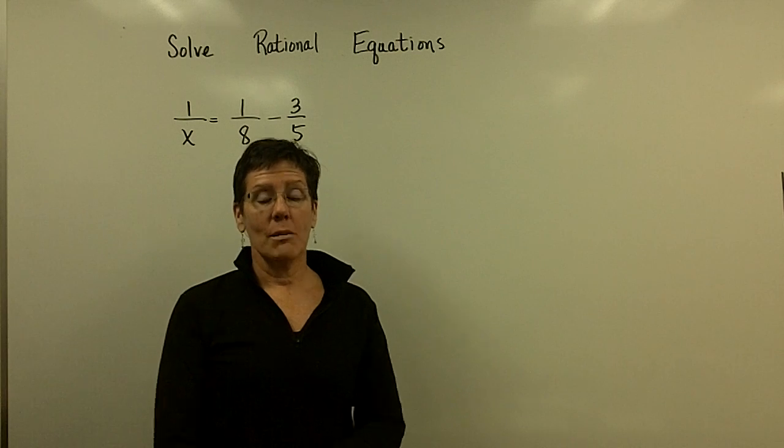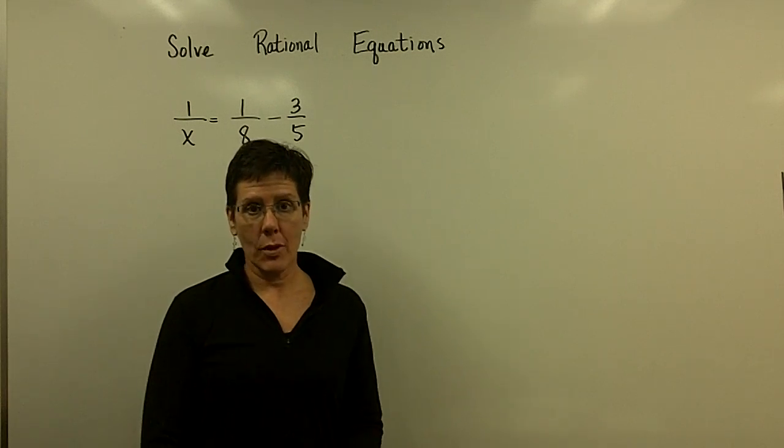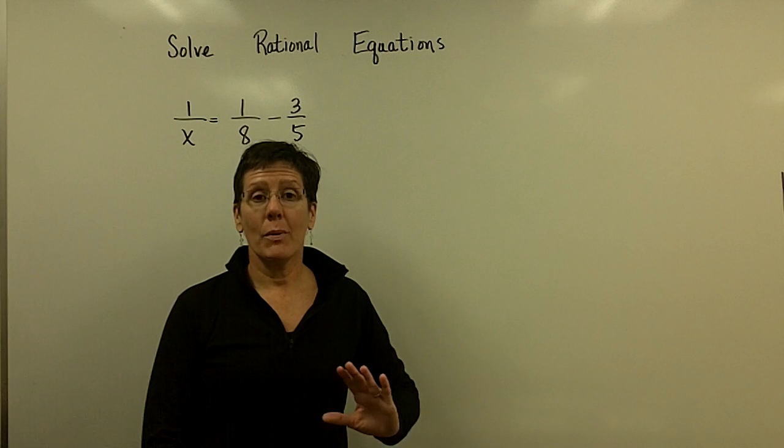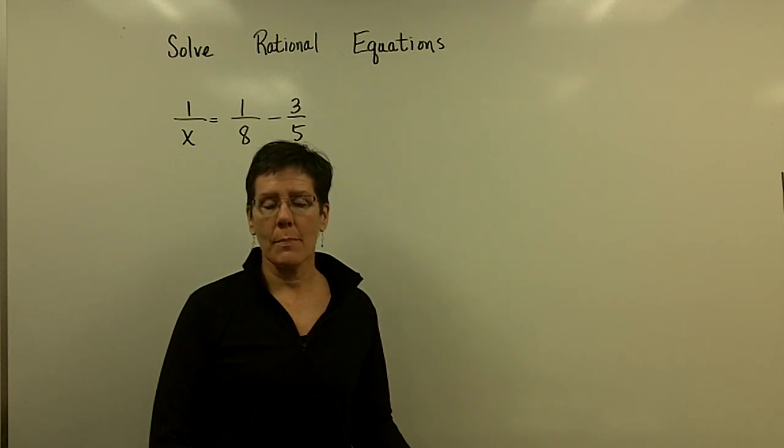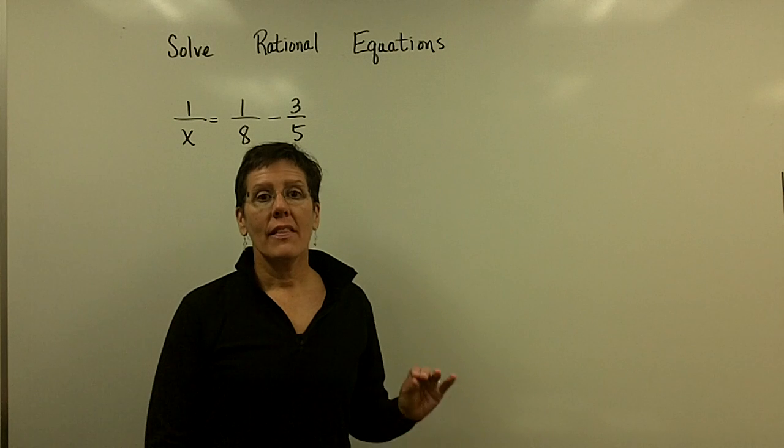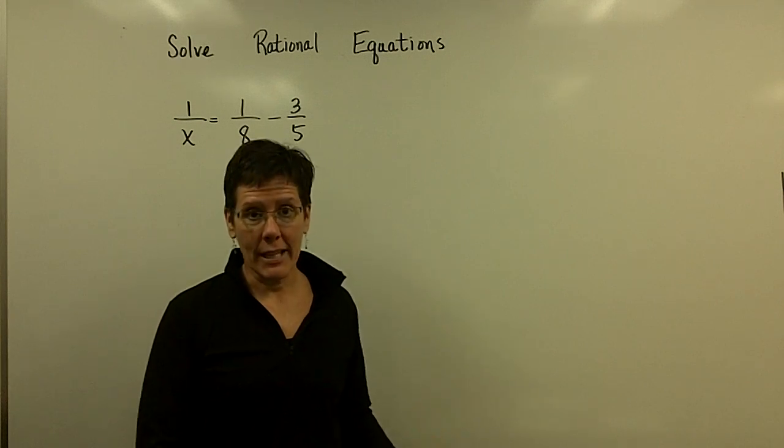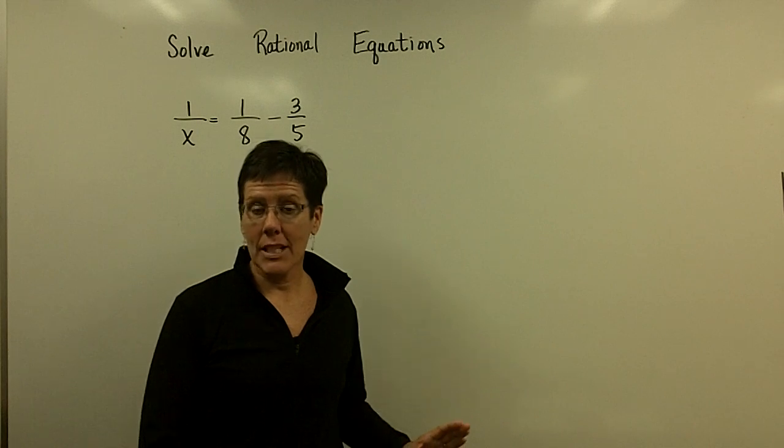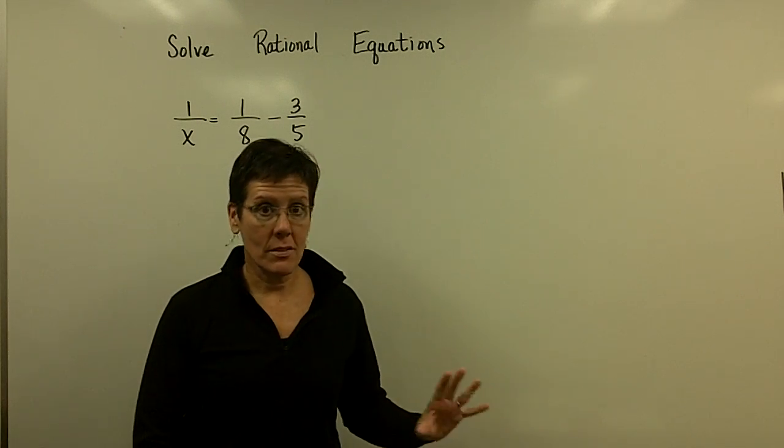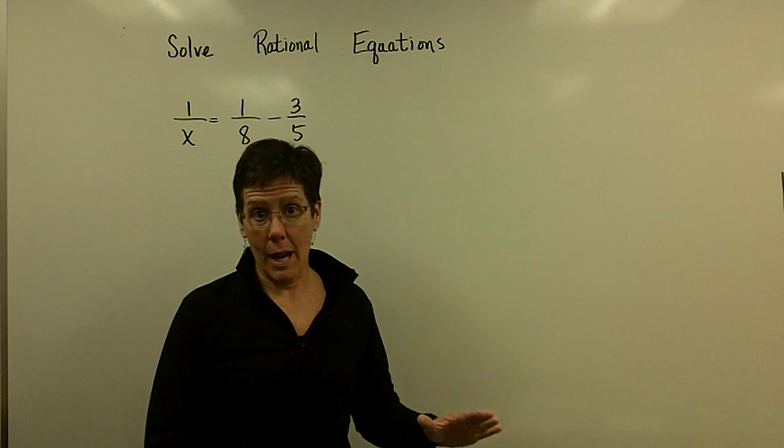Solving rational equations can seem so much like adding and subtracting rational expressions that we can confuse them. As a matter of fact, the first two steps are the same. They are to factor the denominators if you can and then write out for yourself what the least common denominator is. That's where the difference stops.